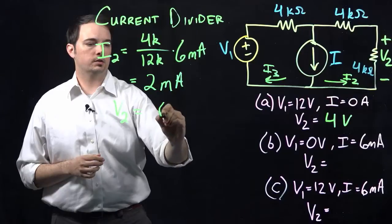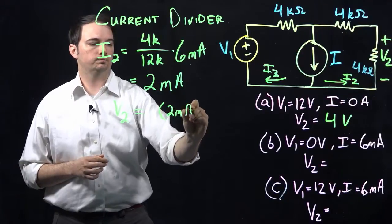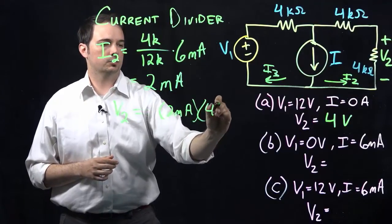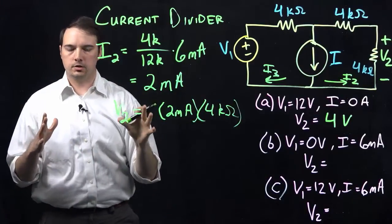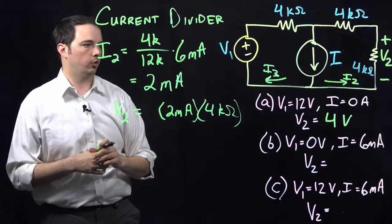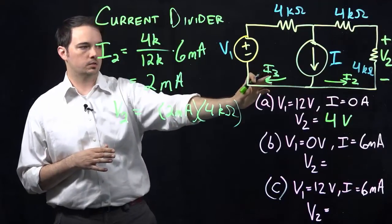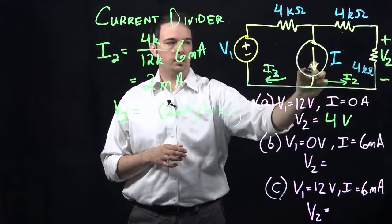The value of the current is 2 milliamps. The value of my resistance, of course, is 4 kiloohms. But aside from just multiplying the two values, we need to be cognizant or mindful of what's going on with the polarities and such. So if you notice that the direction of the current that we've indicated,